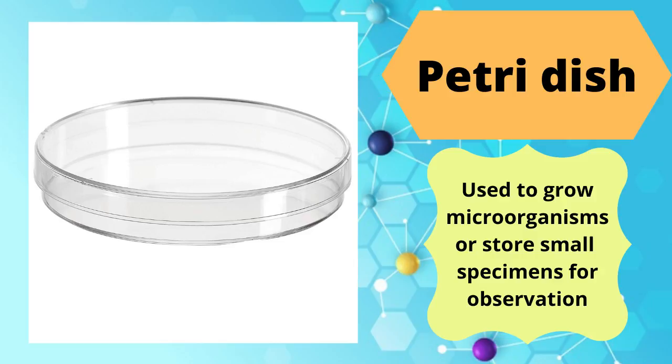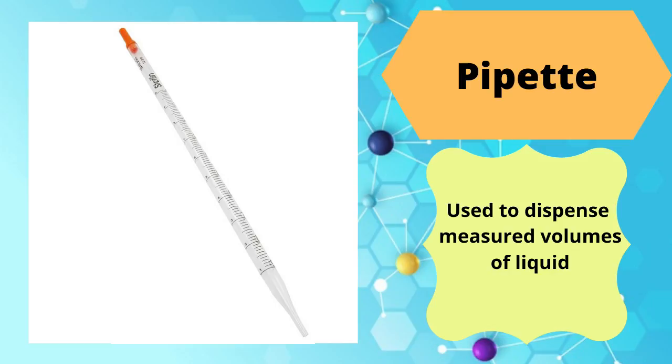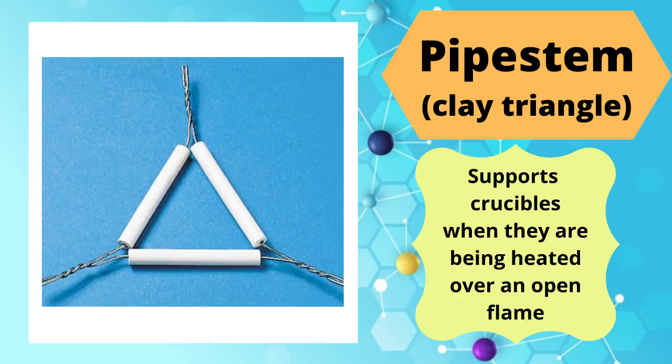Pipette, used to dispense measured volumes of liquid. Pipe stem, also known as a clay triangle, supports crucibles when they are being heated over an open flame.